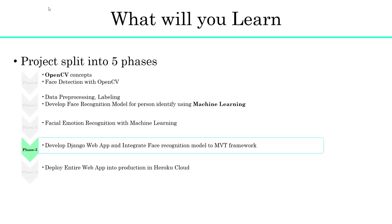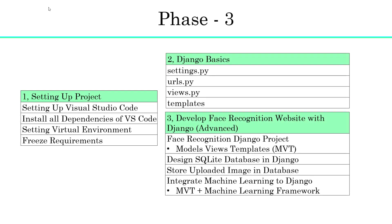In Phase 3, we will develop the website for face recognition using the Django framework, by integrating the machine learning model into the Django Model-View-Template framework. We will cover setting up the project — installations and requirements — then start the concepts on Django, and finally develop the face recognition web app using the Model-View-Template plus machine learning framework.